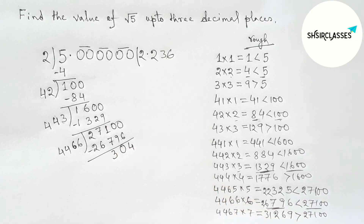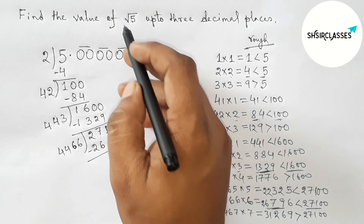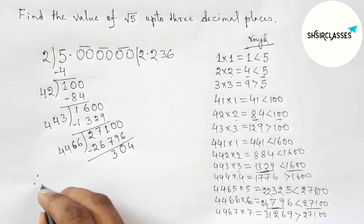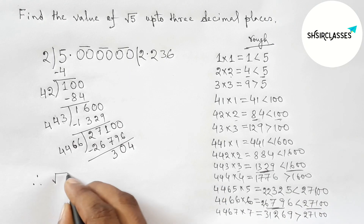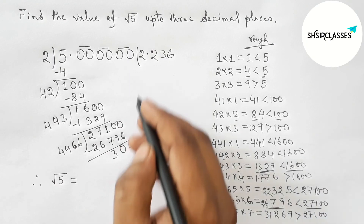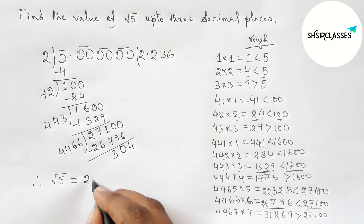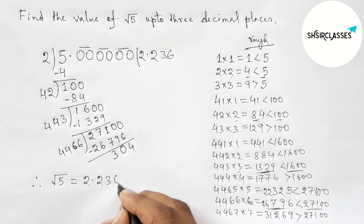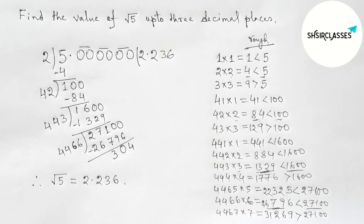The process continues but we only need root 5 up to 3 decimal places. Therefore, root 5 equals 2.236. That's all — thanks for watching, please share it with your friends.